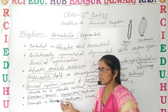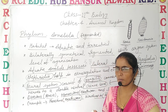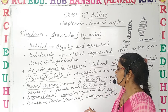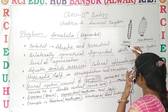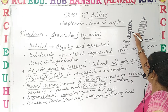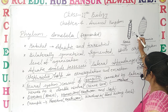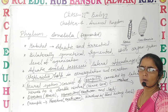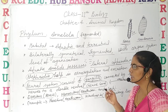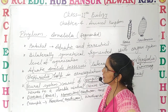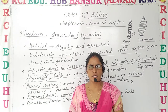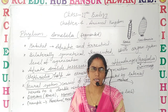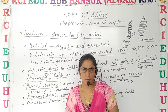Examples include Pheretima (earthworm) and Hirudinaria (blood-sucking leech). In the diagram, you can see the lateral appendages. This concludes the discussion on Annelida. In the next video we will discuss the next phylum. Please like, comment, share and subscribe.